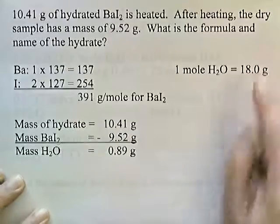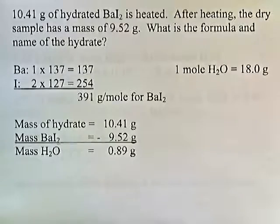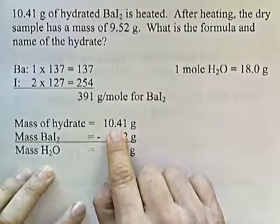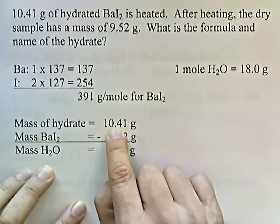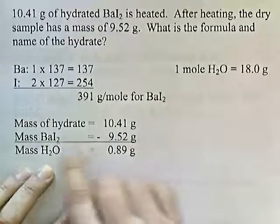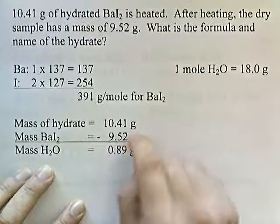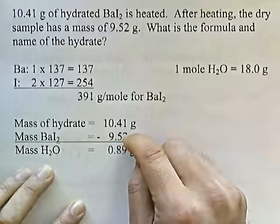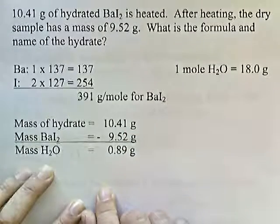This you should just memorize. Now that we have the molar mass of each compound, let's figure out how much water we have trapped in the crystal. So 10.41 grams of the hydrate — this 10.41 represents the combined mass of the barium iodide and the water. And then the barium iodide by itself is 9.52 — this is the barium iodide that remains after the water has been removed. So if we subtract these two, that gives us the mass of water that's been evaporated.